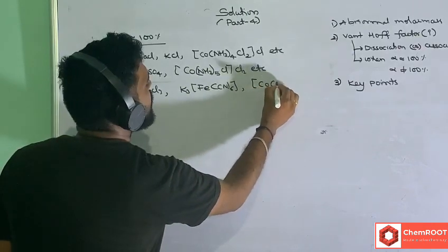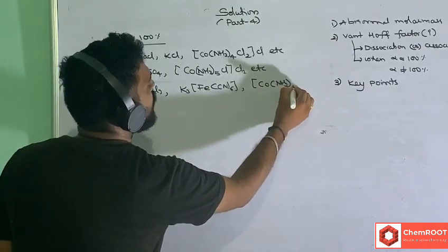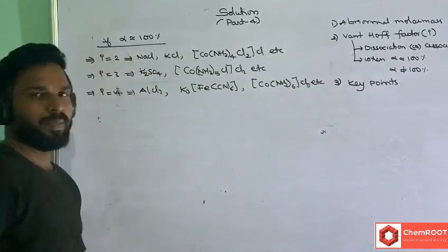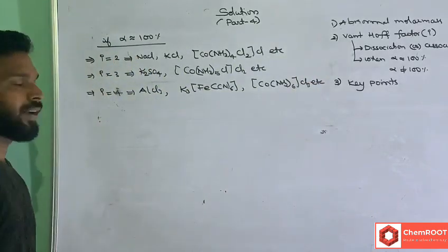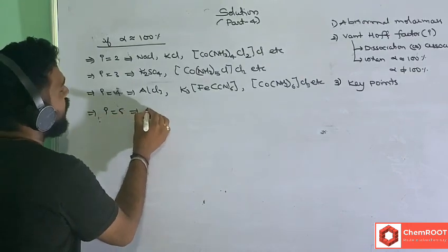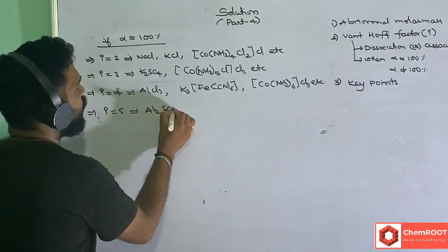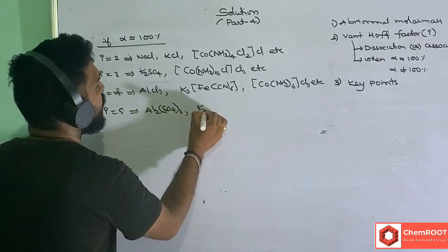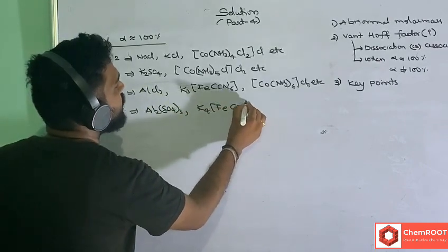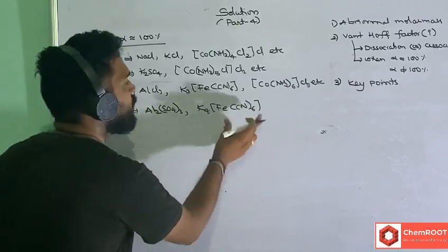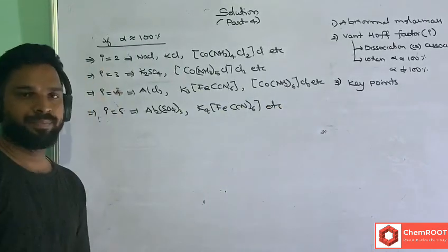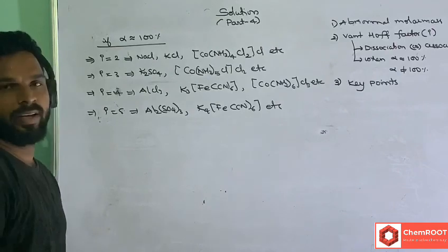This leads to Van't Hoff factor = 4. And i = 5 for 100% dissociation cases like Al₂(SO₄)₃ or K₄[Fe(CN)₆] — in this case 4 counter ions and 1 complex ion give i = 5.